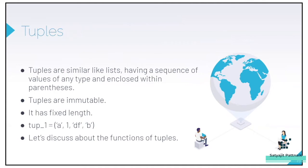Tuples are an ordered sequence of mixed data types, written as comma-separated elements within parentheses. By nature, they are immutable — that means you cannot edit a tuple. If you have four elements in a tuple and want to edit the third, fourth, or first element, it's not possible because of this immutability characteristic. The same is quite possible in lists, but not in tuples.